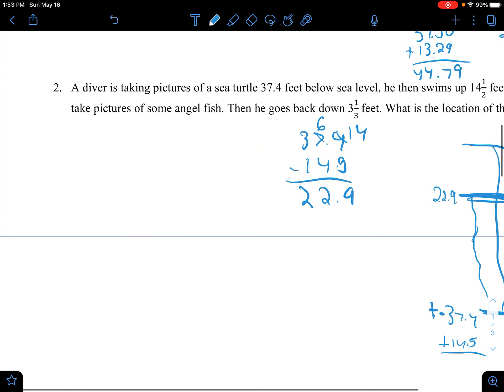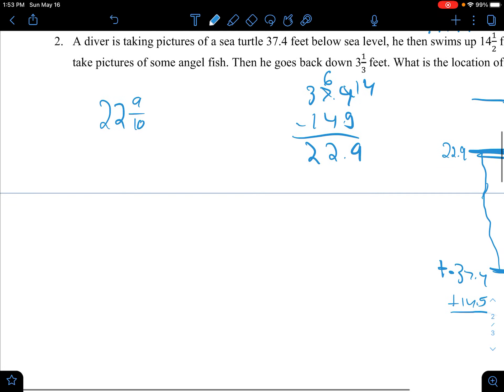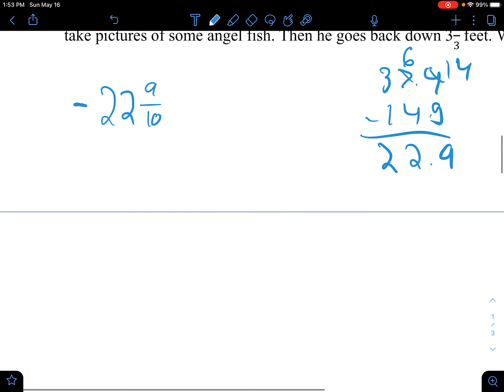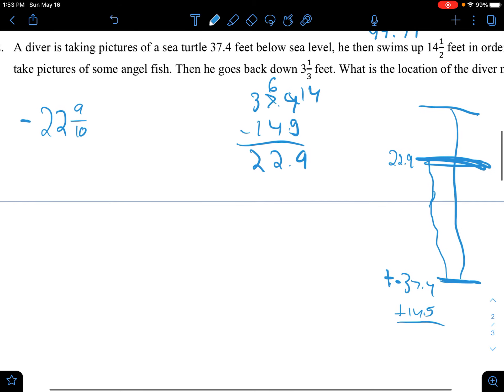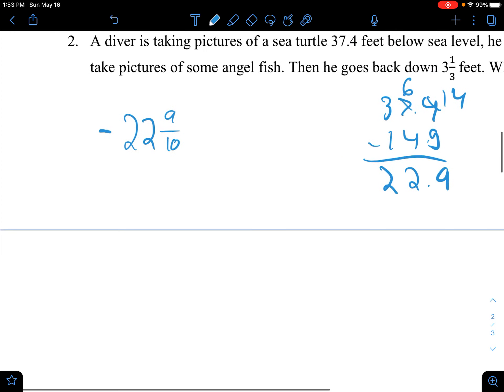Then, he goes back down. Okay. So, 22 9/10 because we do 9 over 10 because 9 is in the tenths place. So, then he goes back down 3 1/3 feet. So, now we have to add them together because it's still negative. Don't forget, 37.4 was greater than 14.5. So, it will still remain negative.